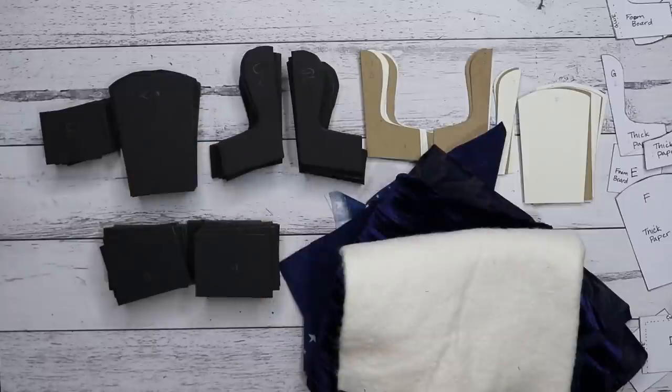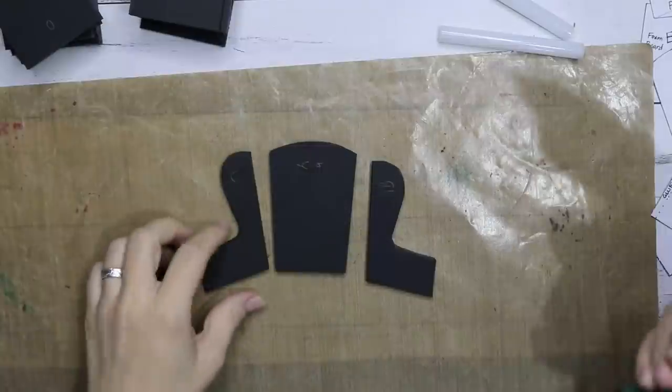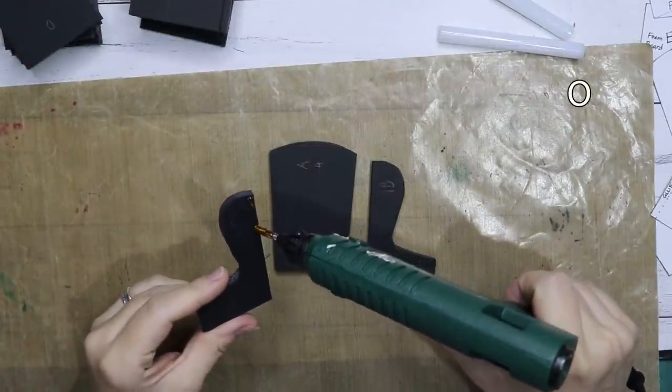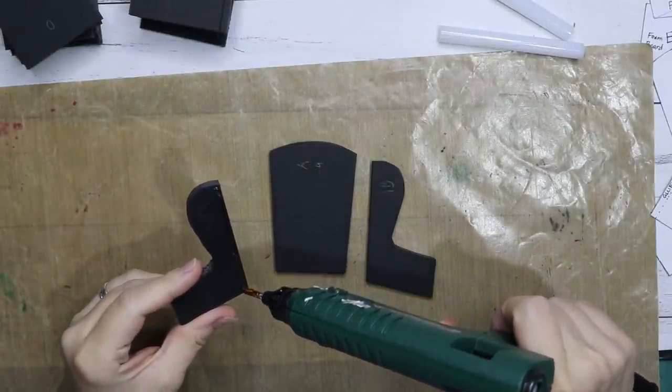Let's just glue it together and make some chairs. Okay, first thing we do is glue these three foam pieces together.